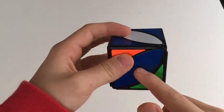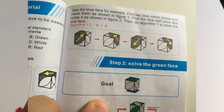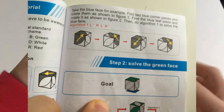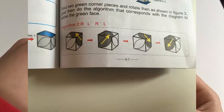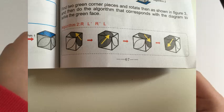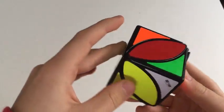If it is here, you are about to perform algorithm 1, which is on the screen now. And if it is over here, we're going to perform algorithm 2. So I'm going to perform algorithm 1 right now. And I have solved the blue side.